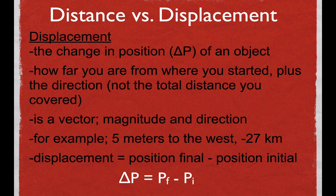Displacement is very different. Displacement is described as the change in position of an object — delta P. This triangle is the Greek letter delta, it means 'the change in,' and P is position. So the change in your position is your displacement. You could also think of it as how far you are from where you started: where did you start, and where did you end, plus you need to include the direction. It's not the total distance — if it were the total distance, that would just be distance.